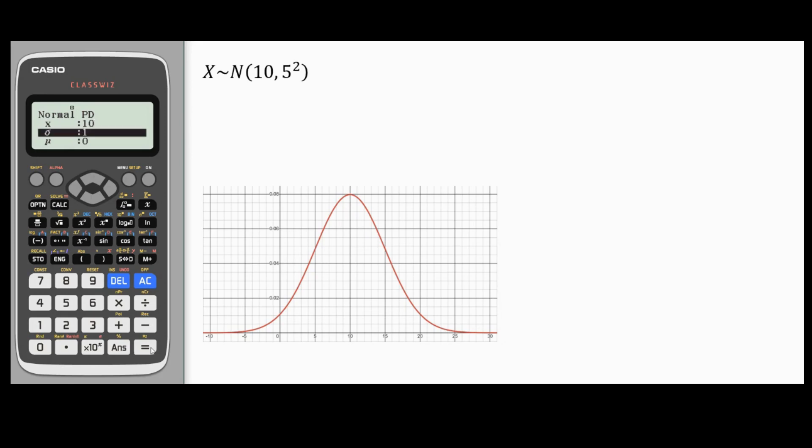I'm going to enter 10 equals and then I need Sigma and Mu. Sigma is the standard deviation. This is the square root of the second number in this bracket. 5 squared is the variance, so 5 is the standard deviation. 5 equals and then Mu is the mean of the normal distribution. That's the first number in the bracket.